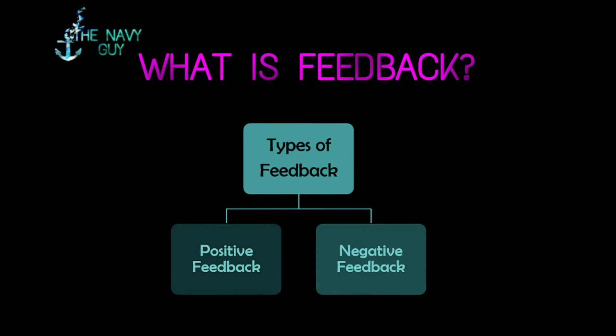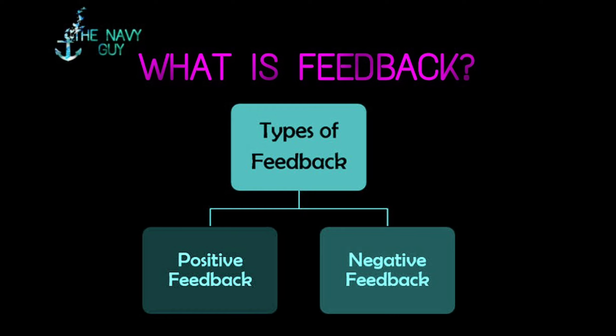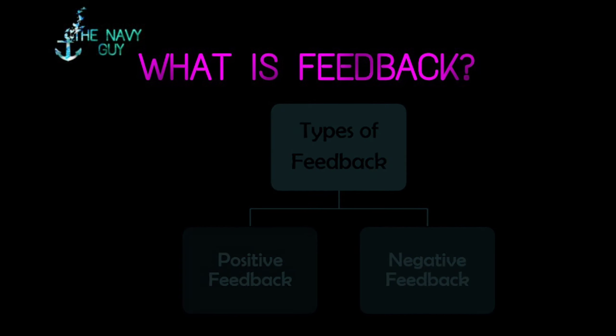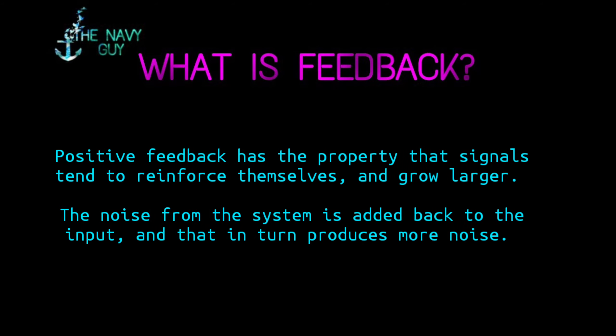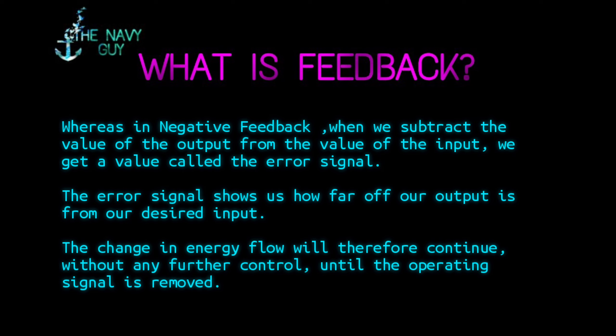Feedback is of two types: positive feedback and negative feedback. Positive feedback has the property that signals tend to reinforce themselves and grow larger — the noise from the system is added back to the input, producing more noise. In negative feedback, when we subtract the value of the output from the value of the input, we get a value called the error signal. The error signal shows how far off our output is from our desired input, and the change in energy flow will continue without any further control until the operating signal is removed.